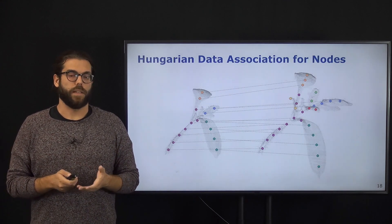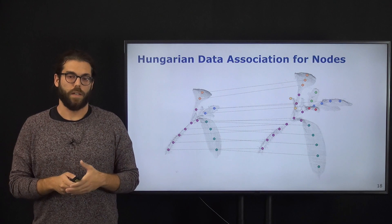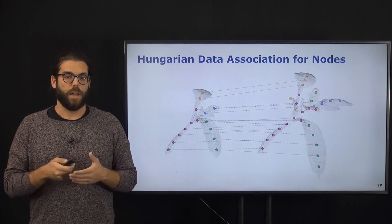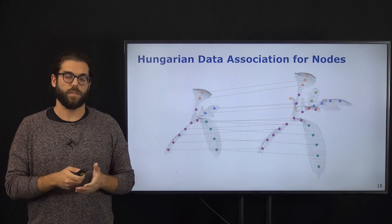Again, the Hungarian method will give us the optimal association that will minimize the total sum of the Euclidean distances based on this cost matrix.